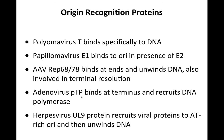The preterminal protein of adenovirus binds at the origins at the end and recruits the DNA polymerase, which then adds a C residue to the preterminal protein, which serves as a primer for DNA synthesis. Finally, the UL9 protein of herpesvirus recruits viral proteins to the origin of replication, which is AT-rich, and helps unwind the DNA — very much like T helps unwind SV40 DNA.